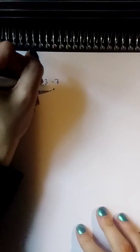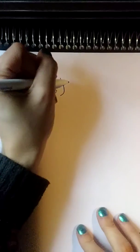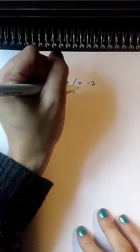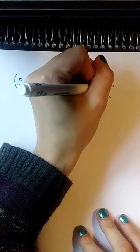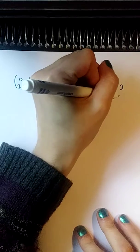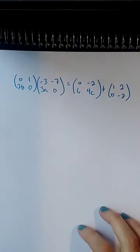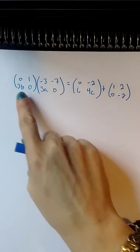(0, 1; 2b, 0) times (-3, -7; 3a, 0). If I multiply those together, it's equal to (0, -2; 6, 4c), plus (1, 2; 0, -2). I have to find the values of a, b, and c.